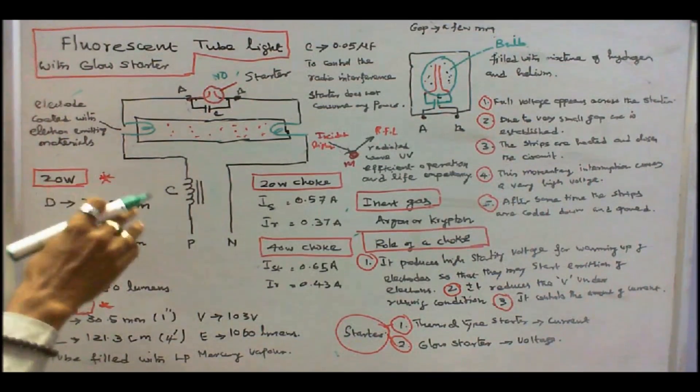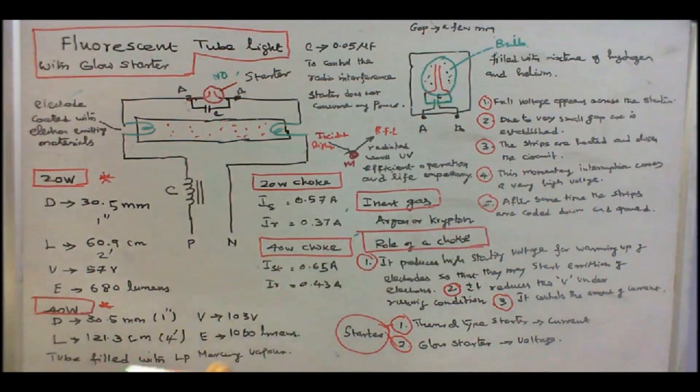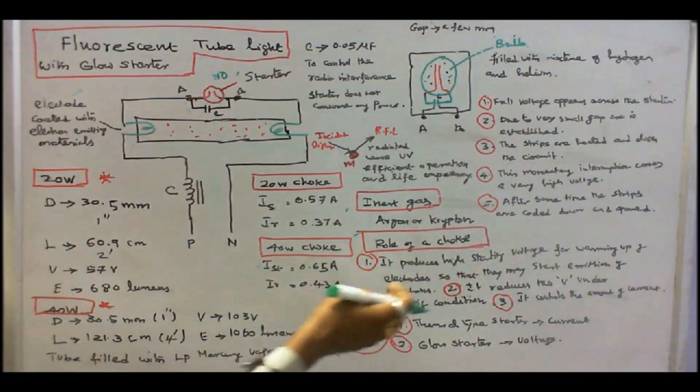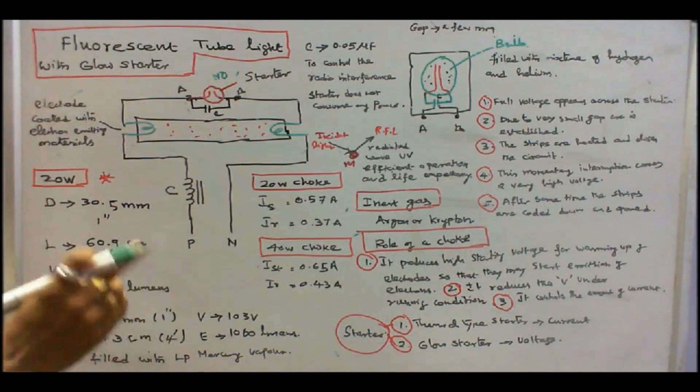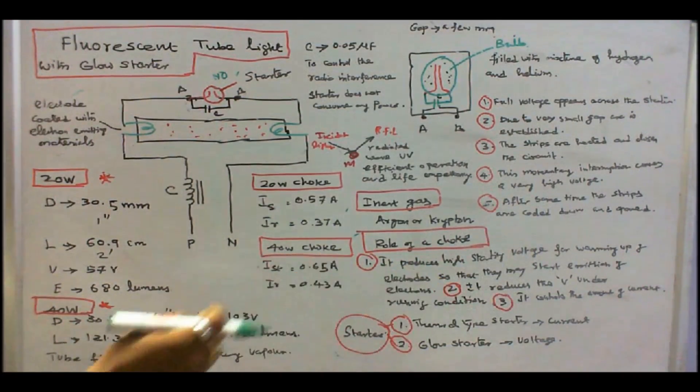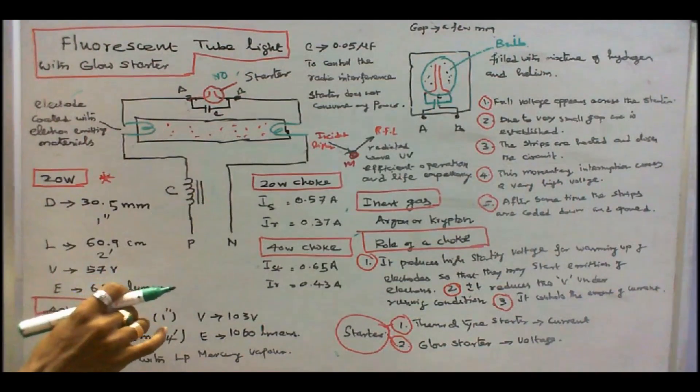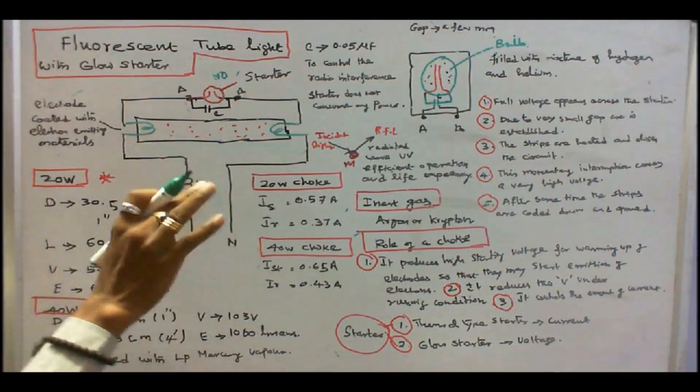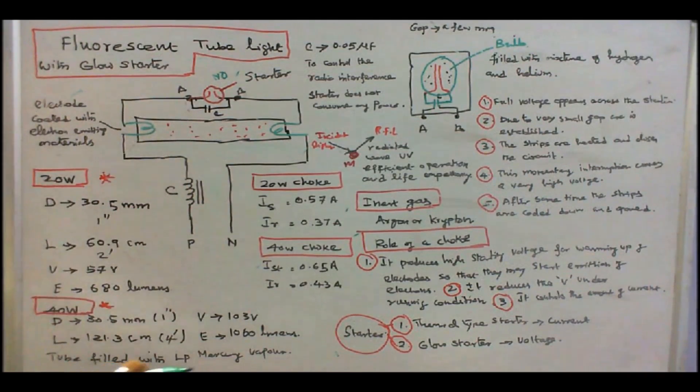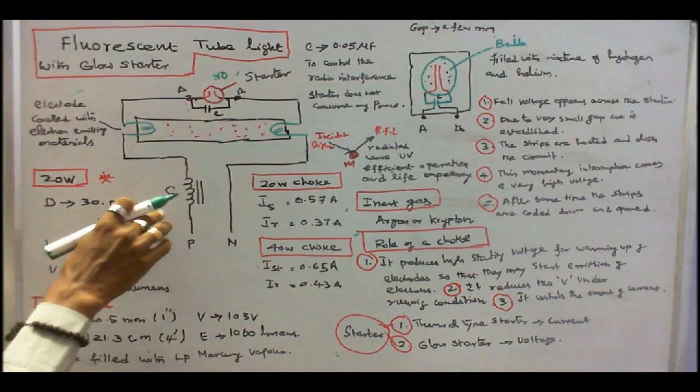So, the role of chokes are, number one, it produces a high starting voltage for warming up of electrodes, so that they may start emitting electrons. Number two, it reduces the voltage under running condition. For starting only, we need 1000 volts. But running condition, 100 volts is enough. But that has to be controlled. Number three, it controls the amount of current. That is the role of a choke.